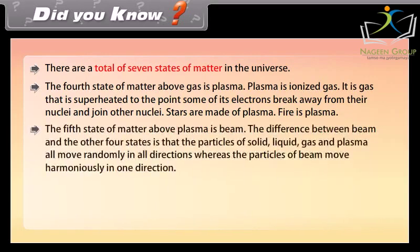The fifth state of matter above plasma is beam. The difference between beam and the other four states is that the particles of solid, liquid, gas and plasma all move randomly in all directions whereas the particles of beam move harmoniously in one direction.